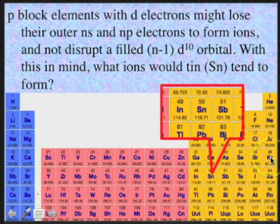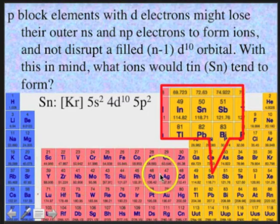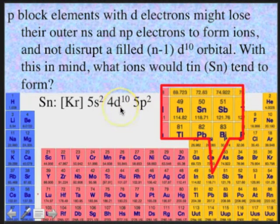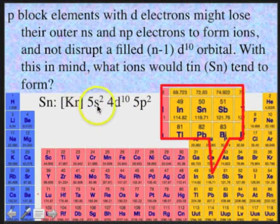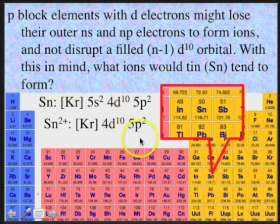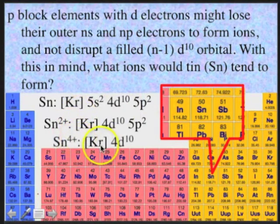The preceding noble gas for tin is krypton, then 5s2, then 4d10, then 5p2. If it tends to lose the s and p electrons without touching the d, tin would first ionize by losing the 5s2 electrons. So for Sn2+, you'd have krypton core, 4d10, 5p2. And if it also lost the 5p2 electrons, you'd have Sn4+: krypton core, 4d10.